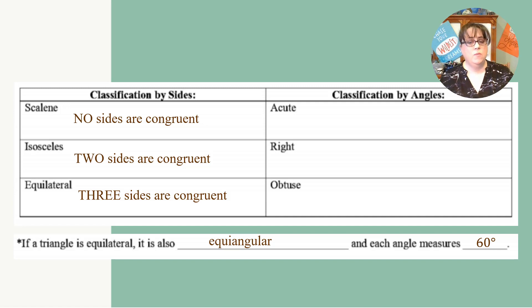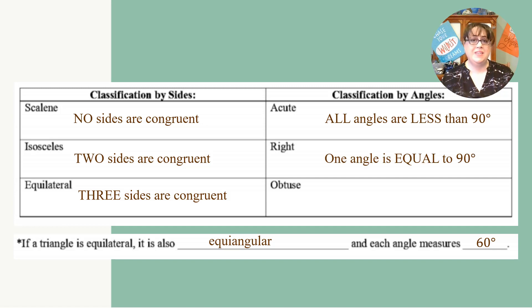An acute triangle means that all angles are less than 90 degrees. But when a triangle is a right triangle, it means that one angle has to be exactly 90 degrees, but only one angle. An obtuse angle means you have to have exactly one angle greater than 90 degrees.